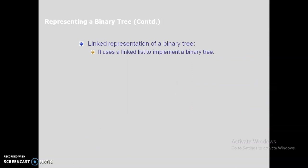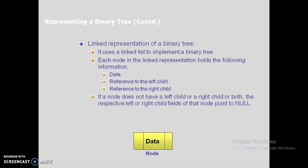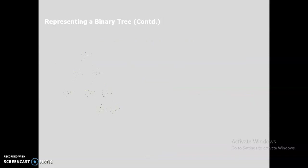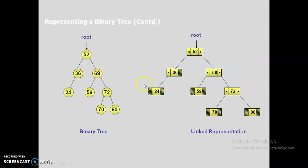Since there is a wastage of space in array representation, we move on to linked list representation. In the linked representation, each node holds the following information: a data portion, a reference to the left child, and a reference to the right child. If a node does not have a left child or a right child or both, the respective pointer points to None, indicating it is a leaf node. In the array case you indexed with 0, 1, 2, 3, 4, 5 and so on.